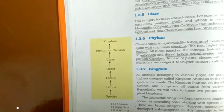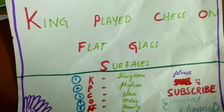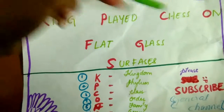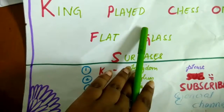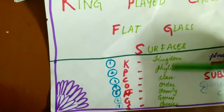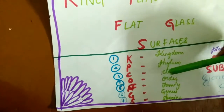Let me quickly tell you the tip I was talking about to remember taxonomical categories in decreasing order: 'King Played Chess On Flat Glass Surface.' K implies Kingdom, P implies Phylum, C implies Class, O implies Order, F implies Family, G implies Genus, S implies Species.